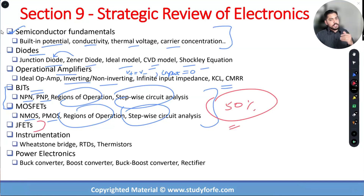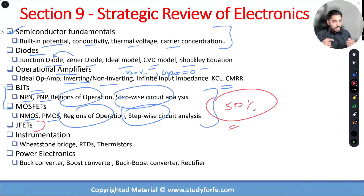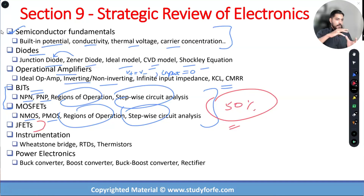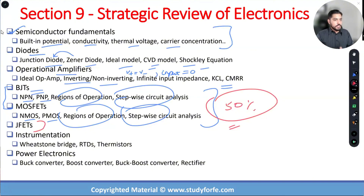JFETs are basically an extension of MOSFETs. The MOSFETs we typically discuss are enhancement mode, where amplification happens. JFETs are similar to depletion mode MOSFETs and are not primarily used for amplification. They're used as variable resistors — by changing the applied voltages, we can change the effective resistance of a JFET and control the overall current of a circuit electronically.